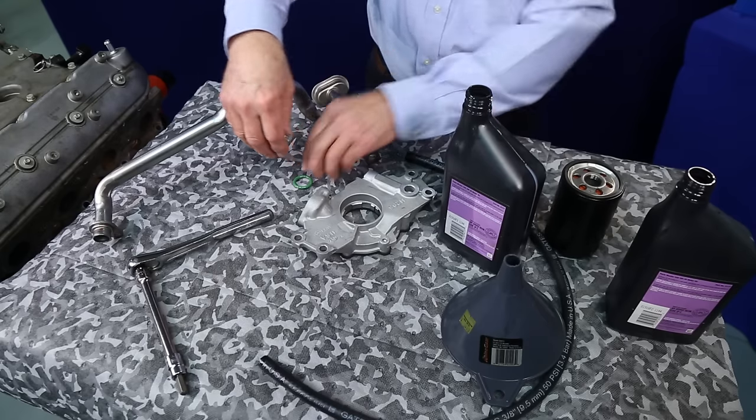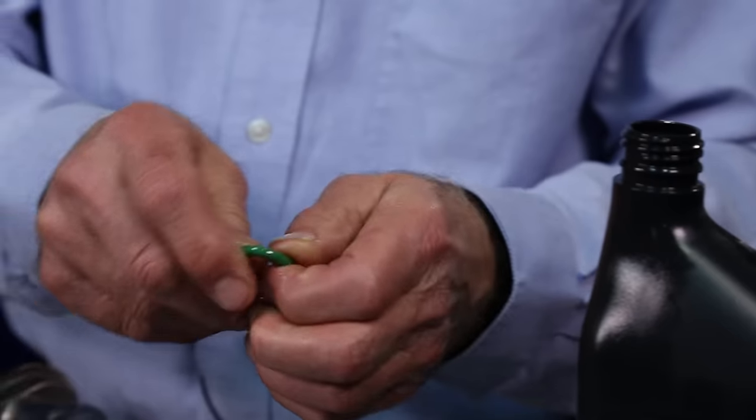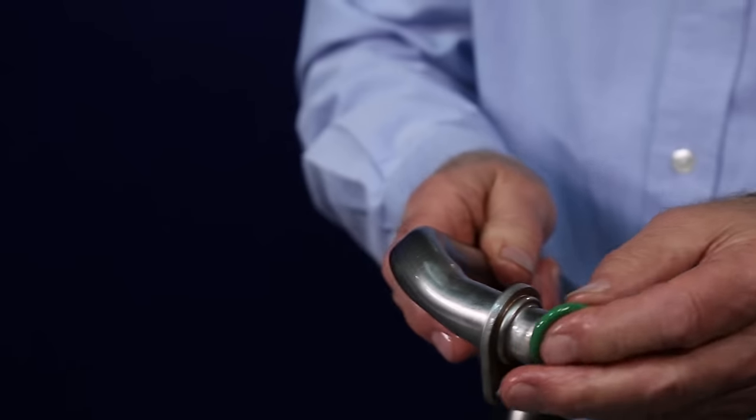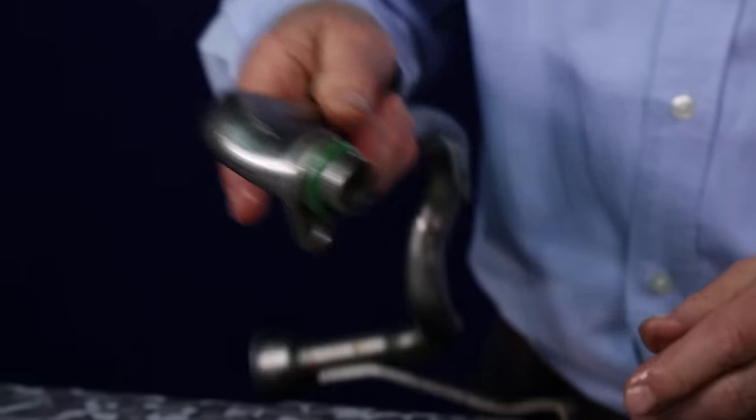Lube the o-ring with your engine oil and install it over the screen, then insert the tube into the pump. The screen will snap into the pump snugly.